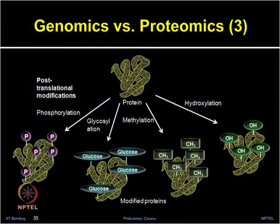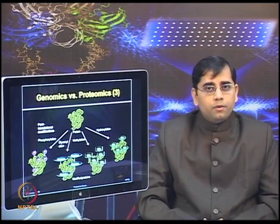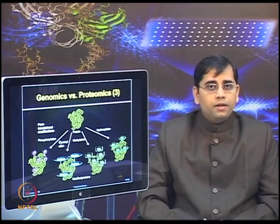Another level of information only obtained at the proteomics level is post-translational modification. Many proteins undergo PTMs at some of their amino acid residues after the synthesis process. These modifications include hydroxylation, methylation, alkylation, phosphorylation, glycosylation, and others, which are some of the most commonly observed PTMs. There are also many other forms of post-translational modification which occur in proteins.